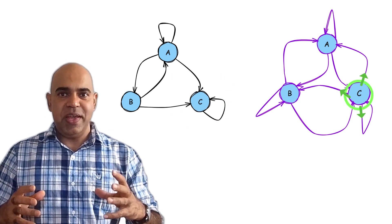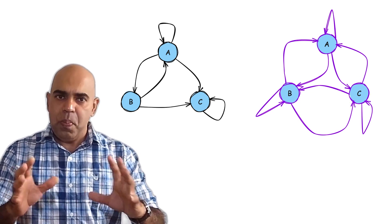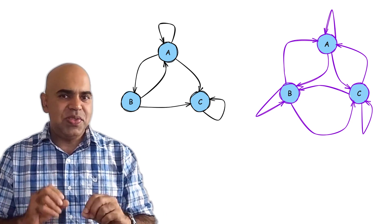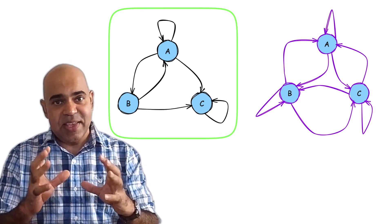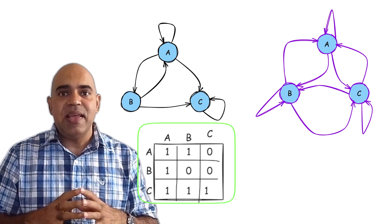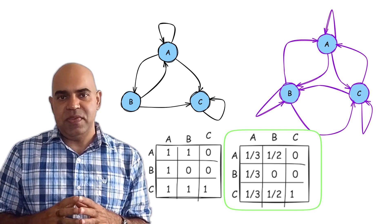The random surfer can teleport to any website, of course, with a certain probability. More on that probability thing soon. The actual hyperlink internet network of this given example has this adjacency matrix, which results in this transition matrix.